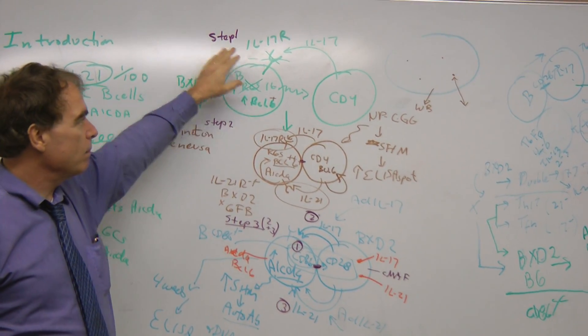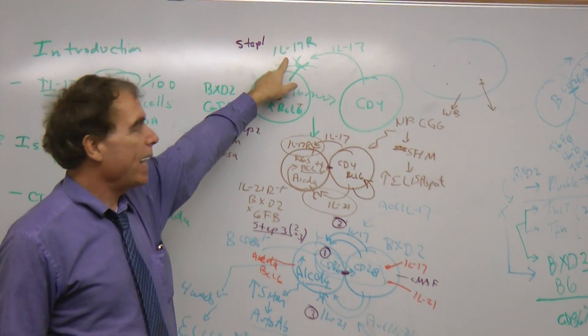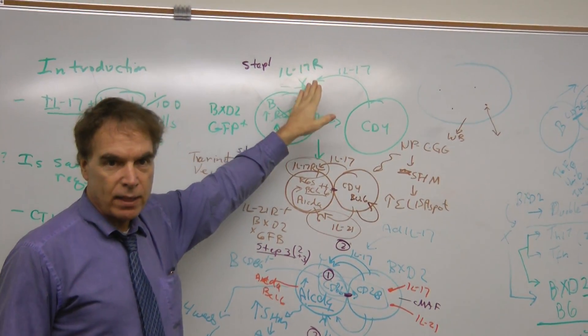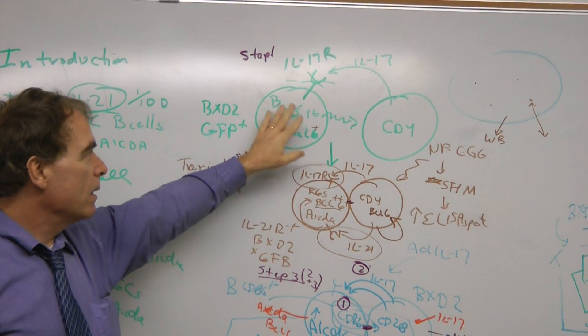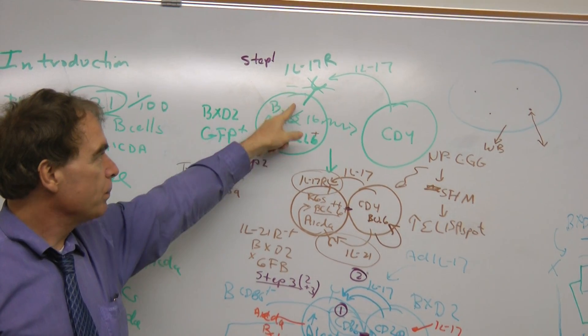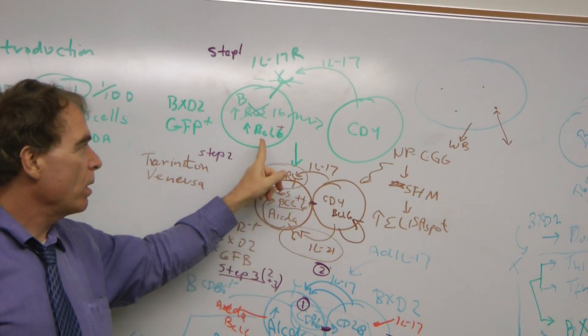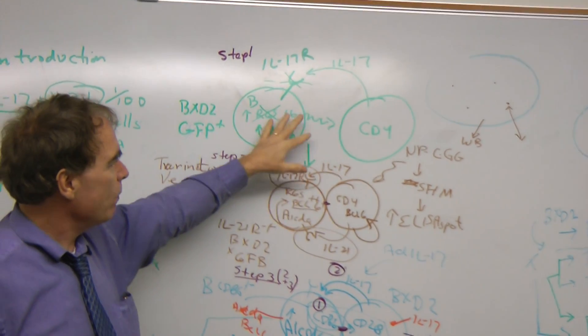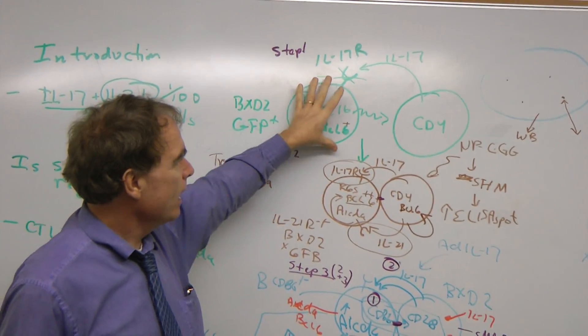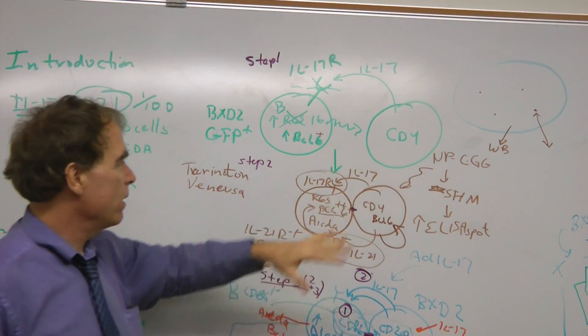The first mechanism is a CD4 T cell produces IL-17, acts through the IL-17 receptor, which is necessary. We have receptor knockout data on this. The B cells undergo NF-kappa-B signaling and upregulation of regulator of G protein signaling, and that slows chemotaxis. We think what happens is this enables the B cells to interact for a longer time scale with the CD4 T cells. That's the first step.